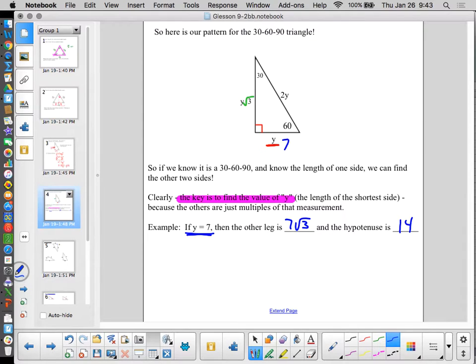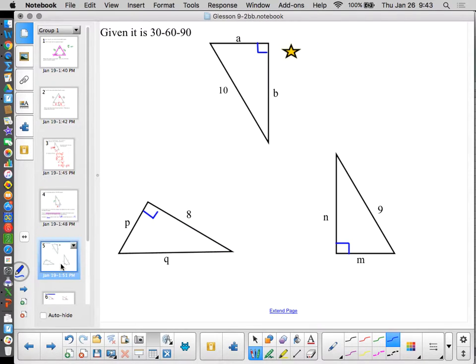Now, if I give you the hypotenuse, obviously, it's pretty easy to find the short side. And once I know the short side, finding the other leg is very easy. The trick is when we get the long leg, we'll get to that in just a second. Let's practice.